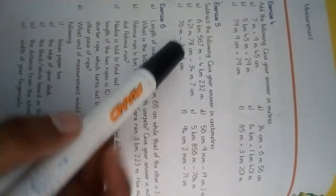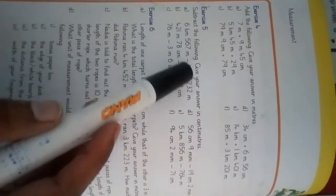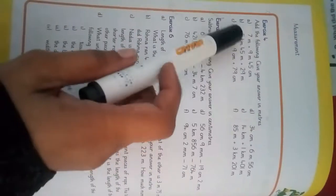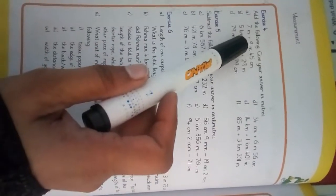The next question is subtract the following. We will subtract these two values and give your answer in centimeters. Let's see. First question is 7 meter in exercise 4, 7 meter plus 9 meter 45 centimeter.